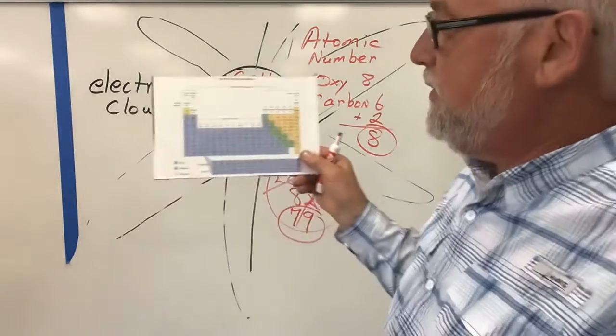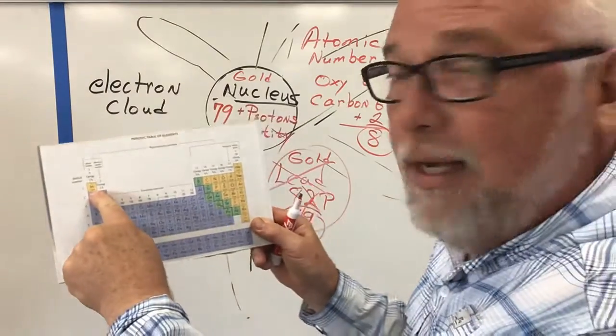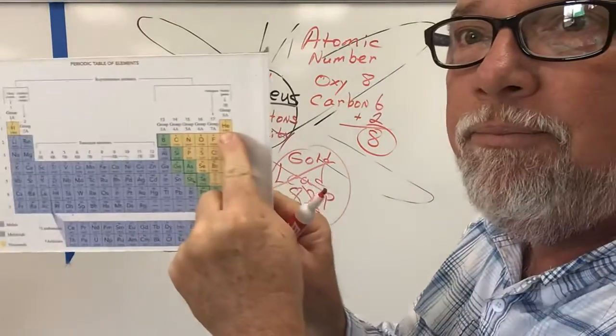when you look at a periodic table of the elements, hydrogen has one. If it had two protons, it would no longer be hydrogen. It would be helium.